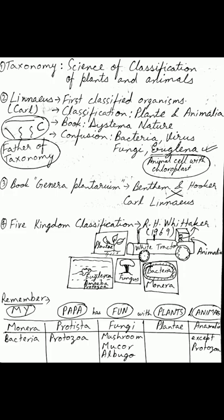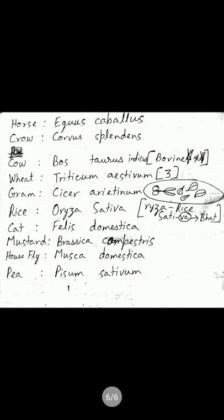Algae is sometimes considered a plant because it has chlorophyll, and sometimes it is considered Protista. These are the important things to remember in the classification of animals and plants.